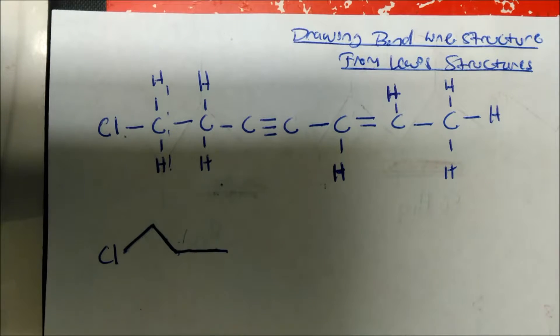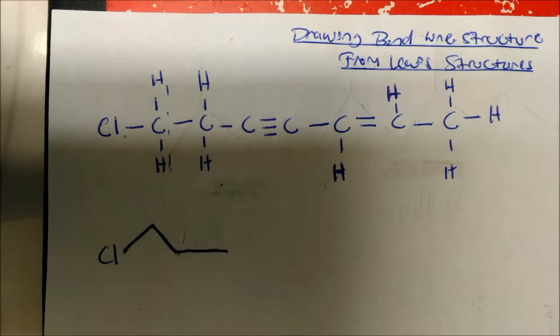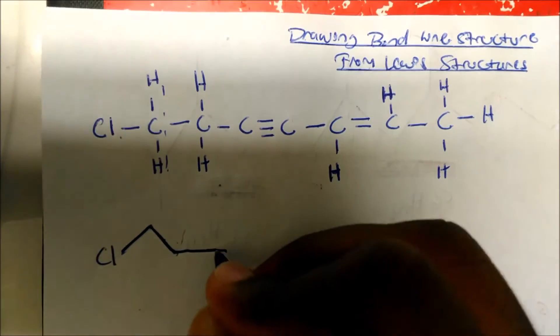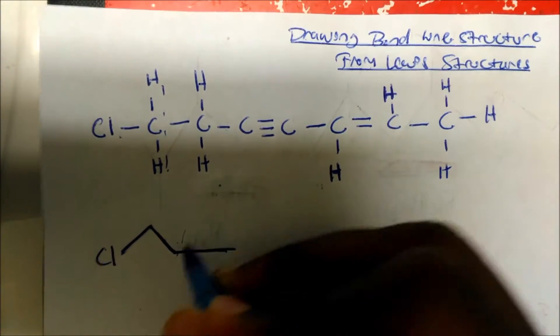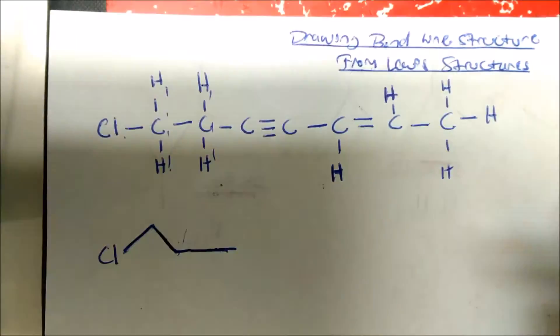The reason why I drew a straight line here is because I saw a triple bond coming up. You always want to draw a triple bond in a straight line because they are SP hybridized, which means they have this linear geometry.